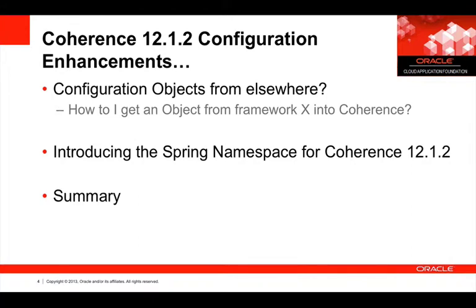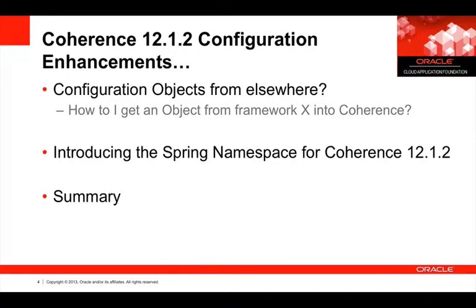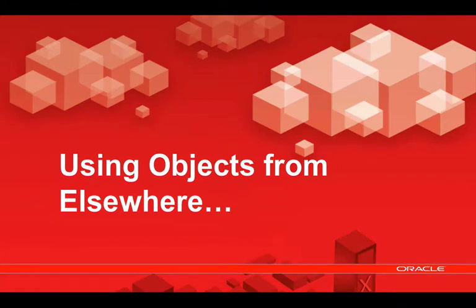We have three topics to discuss. One is the challenge of how do we get objects from elsewhere, how do we solve this traditionally with Coherence, and what can we now do in Coherence 12.1.2. After this we're going to look at the new introduction of Coherence Spring support that comes as part of the Coherence community.